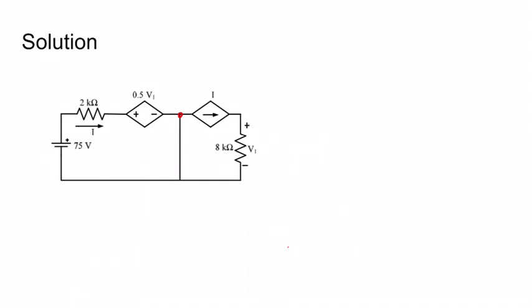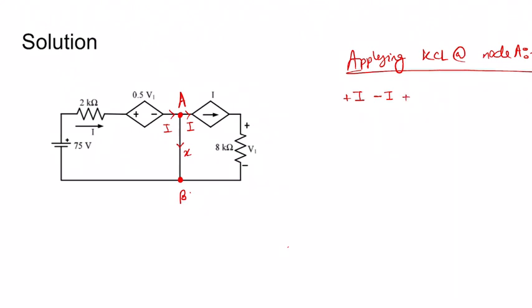Coming to the solution, this is the network given in the question. Now if this is node A and this is node B, applying KCL at node A we get: current i is entering the node, so plus i minus i leaving the node, and if this is x leaving the node, so minus x equal to zero. This implies x equals zero, so no current is flowing through this branch.